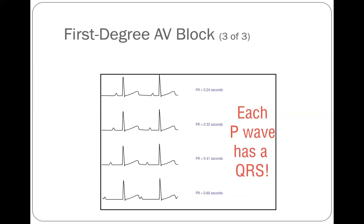On the EKG, every single P-wave has a QRS complex. The distance between the P-wave and QRS complex is consistent in every beat, meaning the P-to-P interval equals the R-to-R interval. We just have a PR interval that is extended — and sometimes it can be significantly extended, as you can see in the fourth cartoon picture.